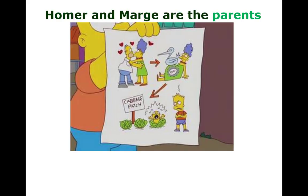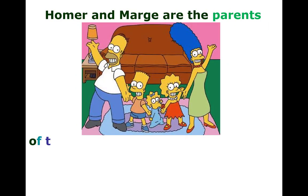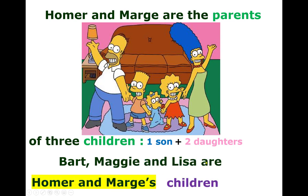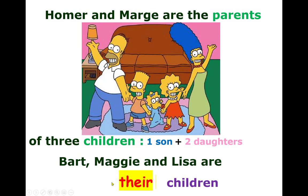Homer and Marge are the parents of three children: one son and two daughters. Bart, Maggie, and Lisa are Homer and Marge's children — that is, they are their children.